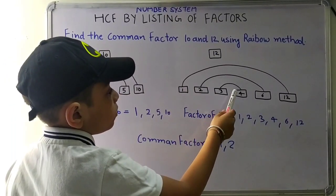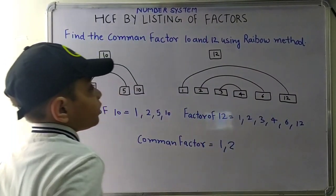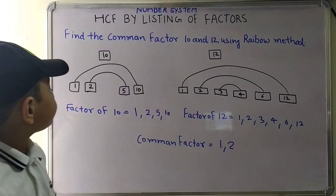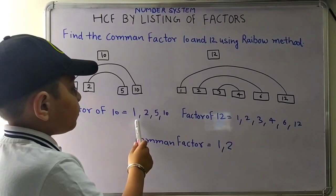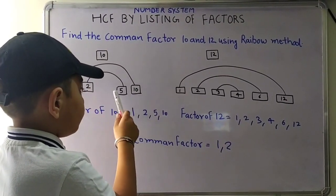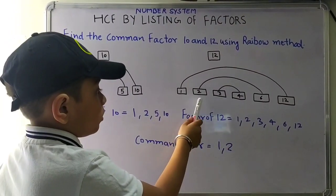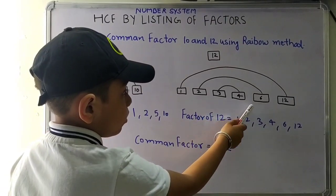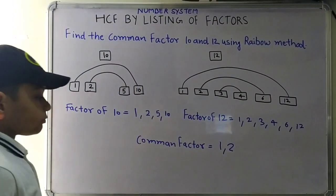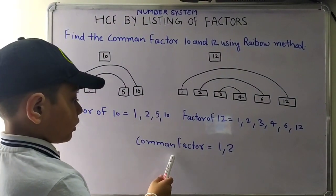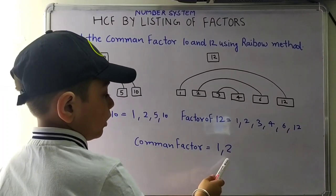1, 2, 3, 4, 6, 12. These are the factors of 12. Factors of 10 are 1, 2, 5, 10. And the factors of 12 are 1, 2, 3, 4, 6, and 12. The common factors are 1 and 2.